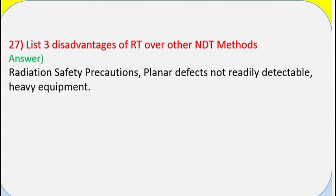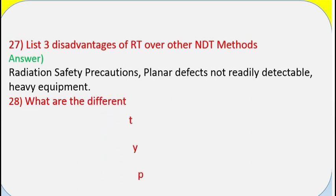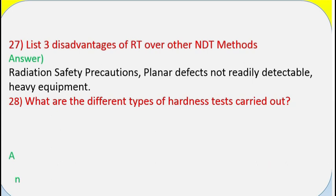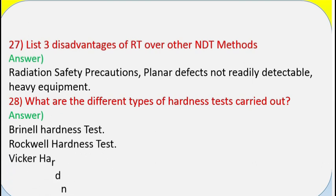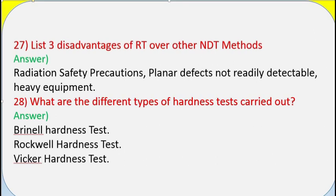Question 27: List 3 disadvantages of RT over other NDT methods. Answer: Radiation safety precautions required; planar defects not readily detectable; heavy equipment. Question 28: What are the different types of hardness tests carried out? Answer: Brinell hardness test, Rockwell hardness test, Vickers hardness test.